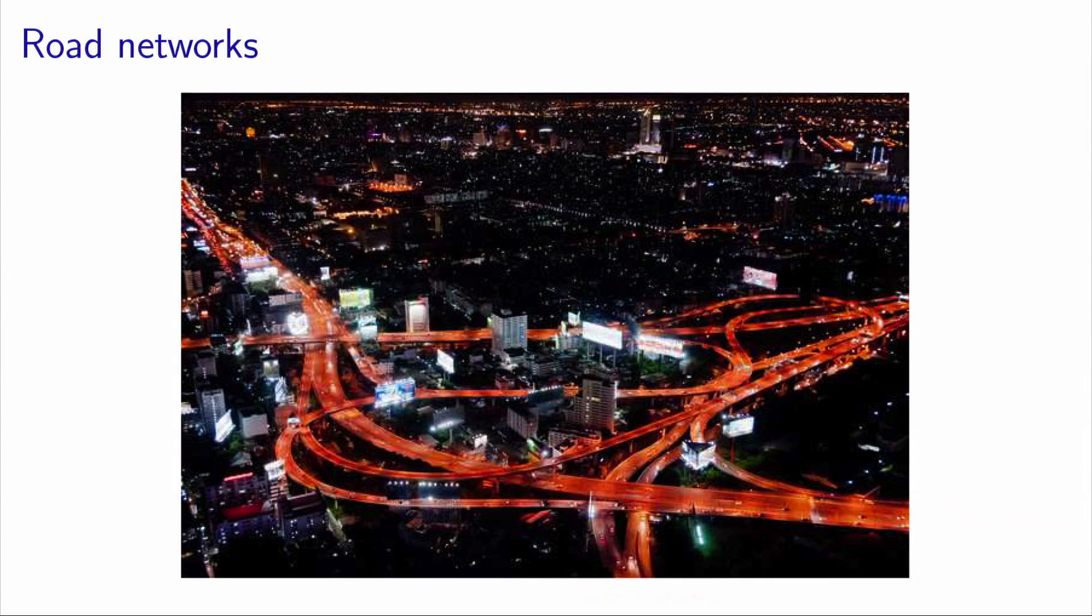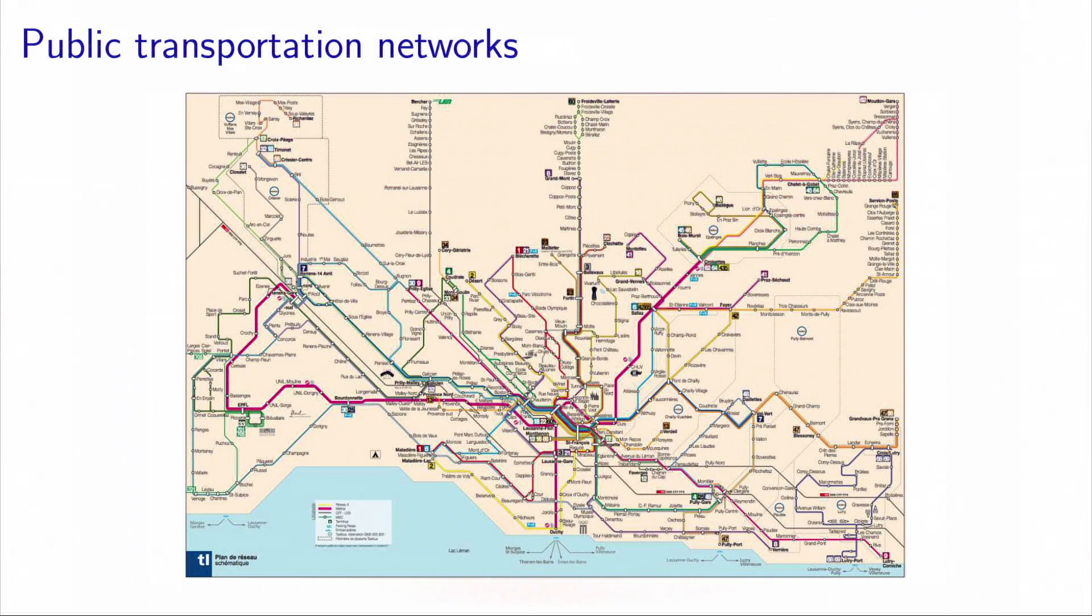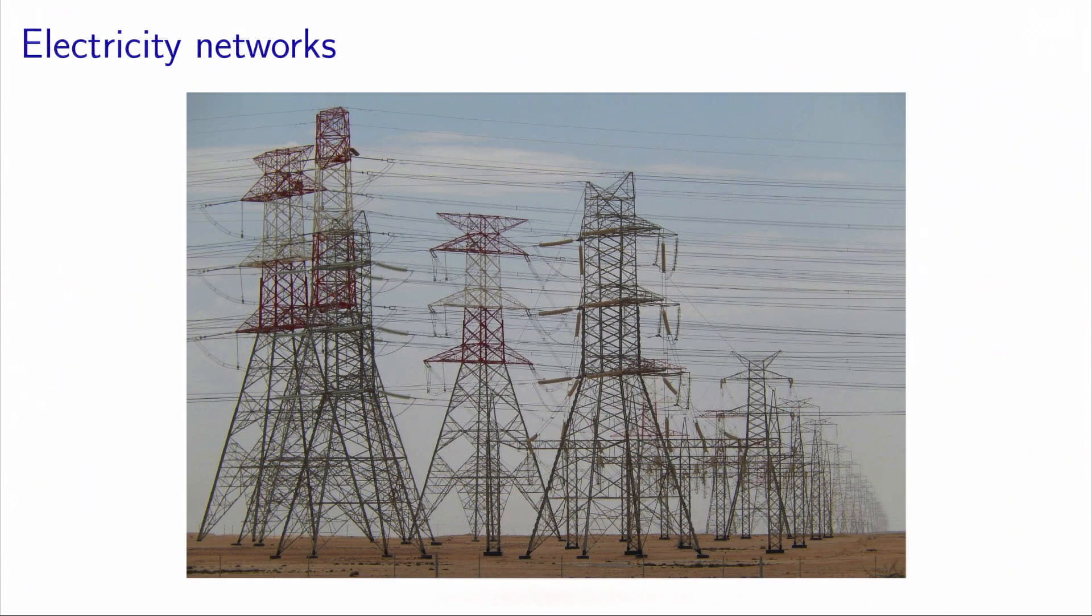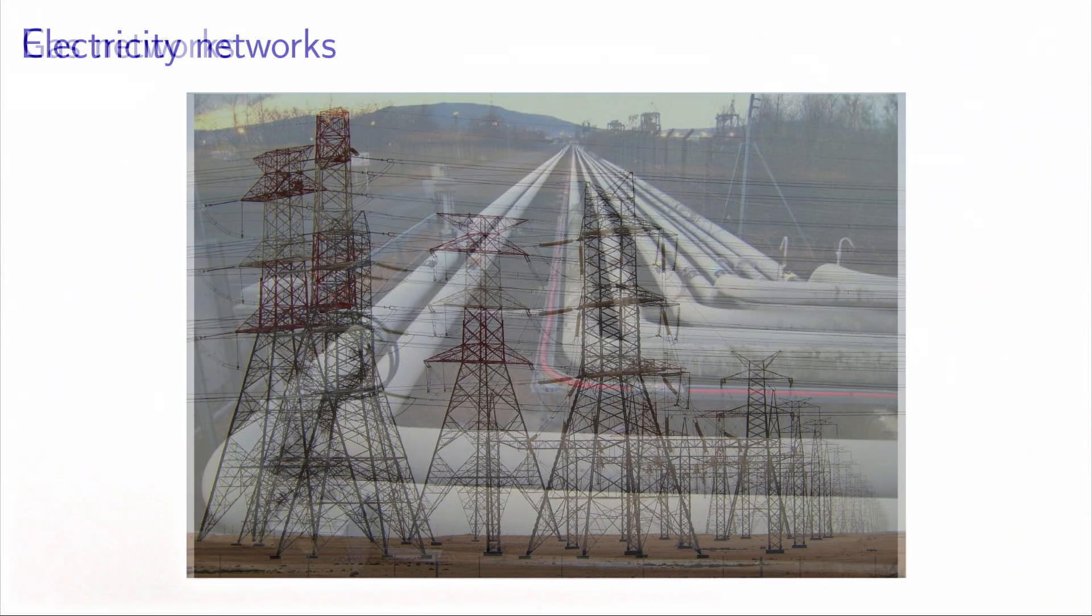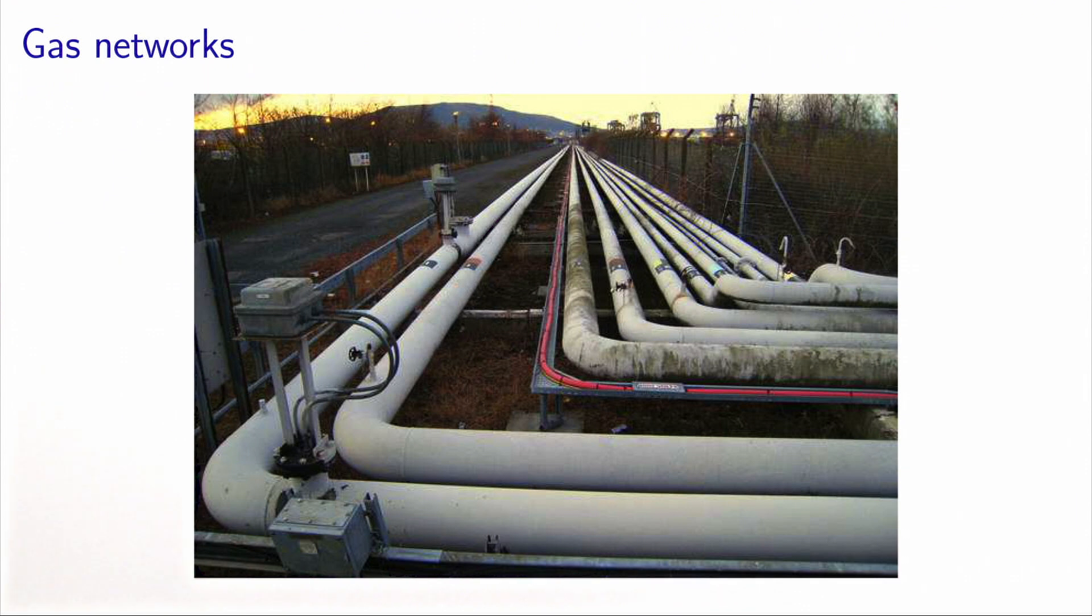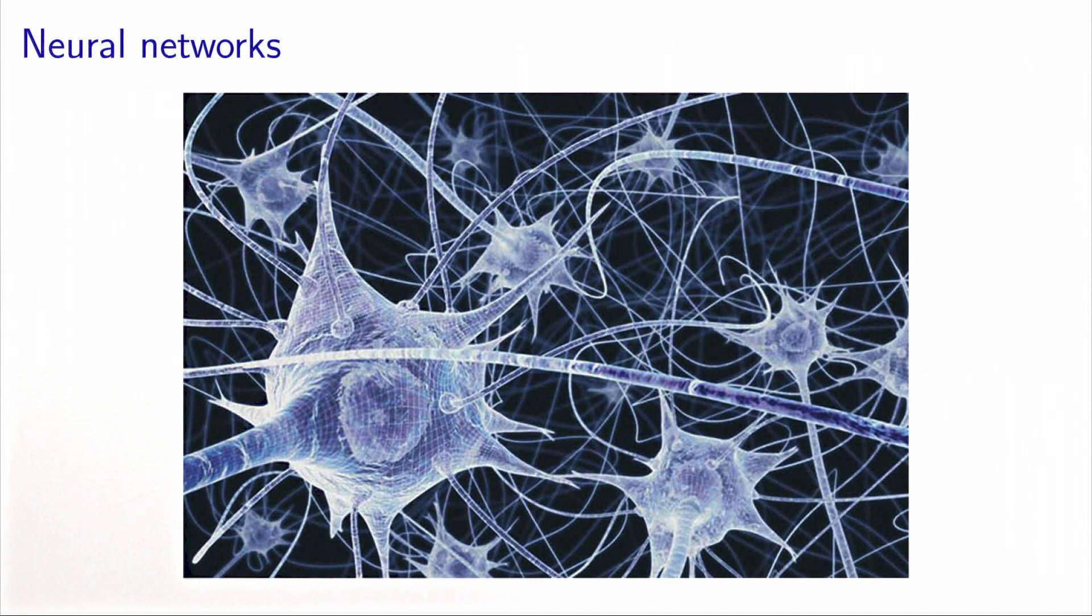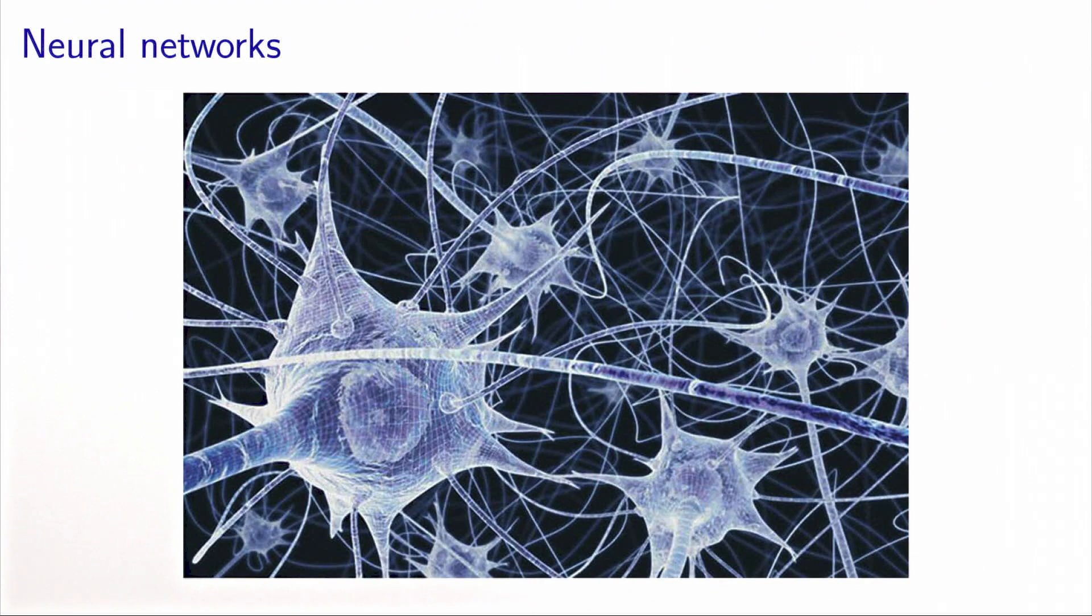Among the real networks, we have road networks, public transportation networks, electricity networks, gas networks, water networks, and computer networks. In our brain, we have neural networks.